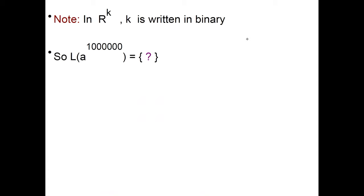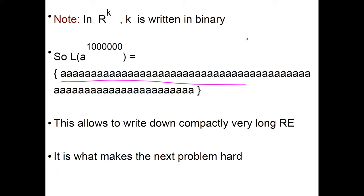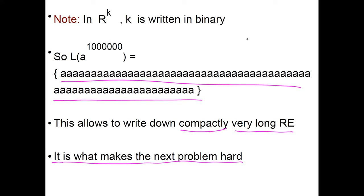The critical thing is that k is written in binary. So for example, the language of a to one followed by six zeros would be a very long string — because k is written in binary, I can write down compactly very long REs. This is what makes the next problem hard: the ability to write long REs compactly. I could not do this with simple REs because it would take a long expression to write down all these concatenations.